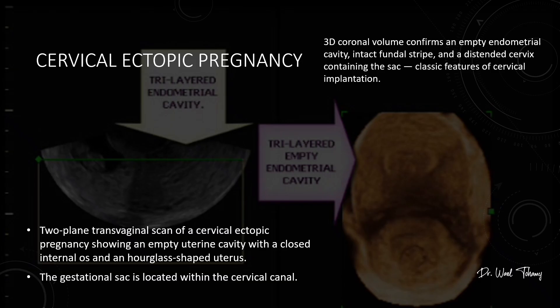This 3D coronal view confirms the diagnosis — the endometrial cavity is completely empty, the fundal stripe is intact, and the cervix is distended, containing the gestational sac. These are classic features of cervical implantation, and 3D imaging makes them crystal clear for both diagnosis and teaching.